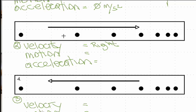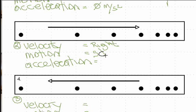Since the spacing isn't equal, we need to determine if it's speeding up or slowing down. Going to the right, the drops are getting closer and closer together — eventually they'd be right on top of each other, meaning the object would be standing still. So the object is slowing down. Eventually it would come to rest.